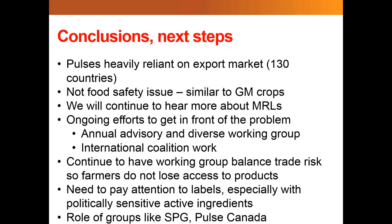One of the questions that came in: going back to when you were talking about the different countries and MRLs, Gord — is there a spot where a person could find out which countries follow Codex versus those that have their own MRL list or a national list? Well, that's a good question. In general, you've got to do a lot of work to find out those specifics. On the sheet that Mac showed from Keep It Clean, there were eight active ingredients multiplied by five pulse crops, and embedded in there are anywhere between four or half a dozen or sometimes more markets that we're looking at to see whether we've got the MRLs in place.